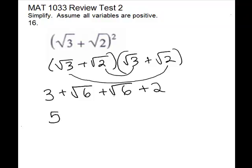Now we'll combine things that are alike. The constants are alike: 3 plus 2 is 5. Also, your radicals are alike. Remember we combine the number on the outside — if we don't see a number, it's a 1. So we have 1 times square root of 6 and 1 times square root of 6. 1 plus 1 gives us 2, and we keep one copy of the square root of 6.